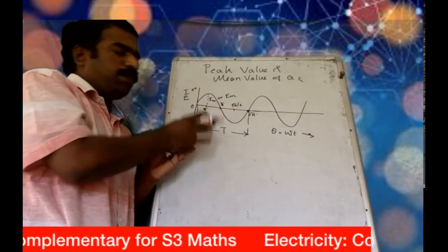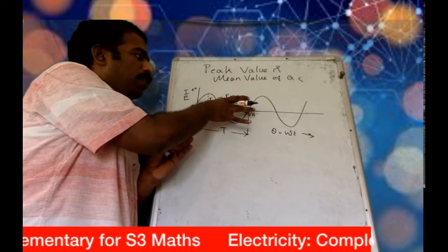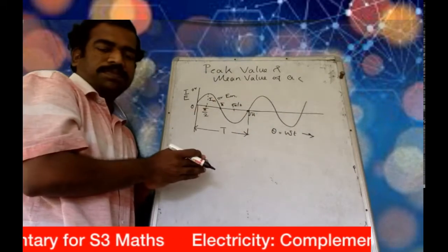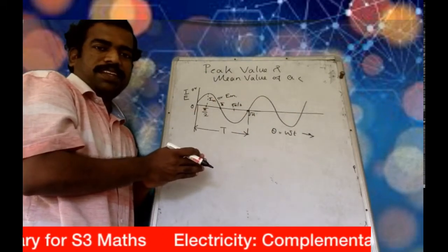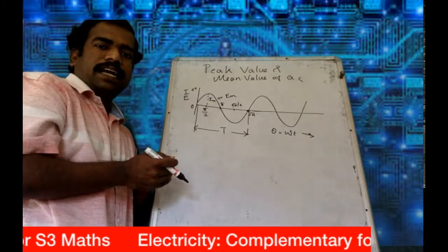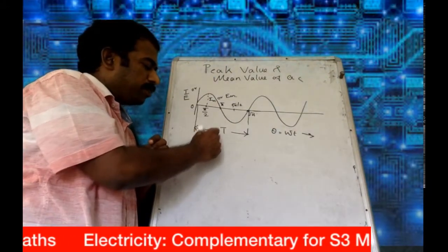In this case, the period of the wave is 2π, because after 2π the effect is the same. So in an alternating current, the period of an AC wave is 2π.